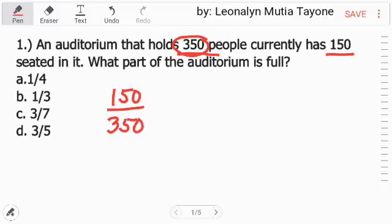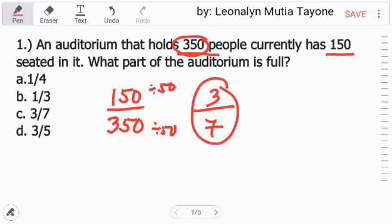150 over 350. I-least natin yan by finding the greatest common factor. Ang greatest common factor niya ay 50. So, i-divide natin ng 50. 150 divided by 50 is 3. 350 divided by 50, 7. So, ang sagot dito ay 3 over 7, letter C.